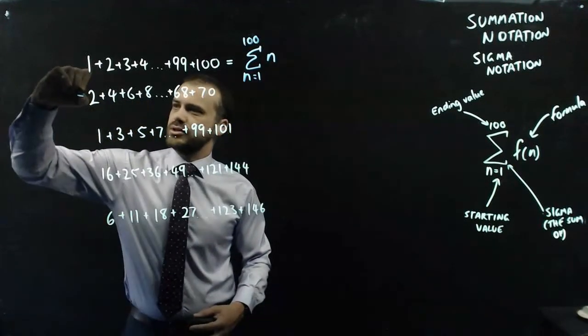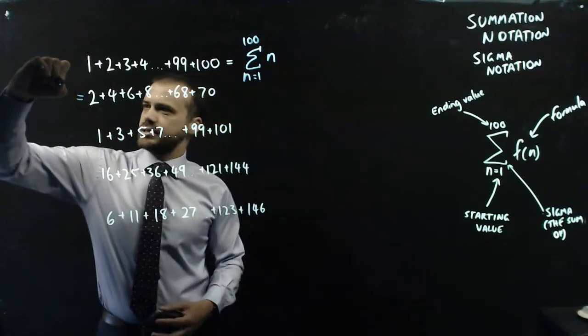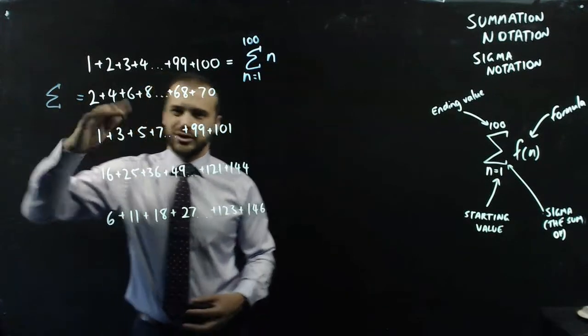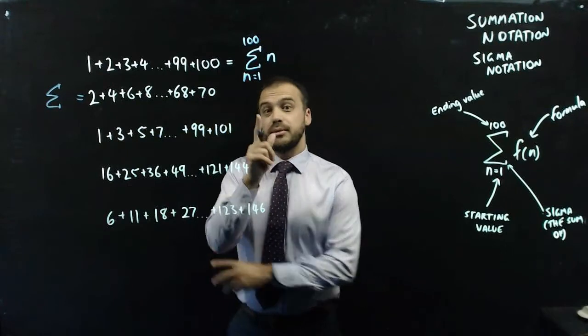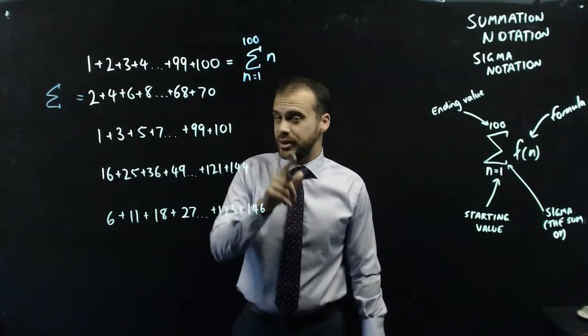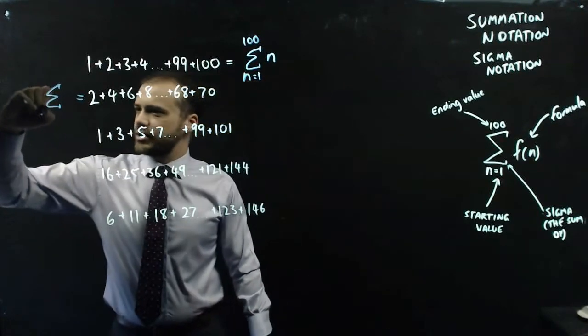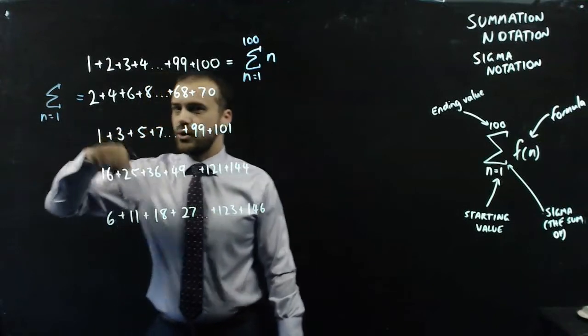I'll just put this over here this time. We're going to need our sigma sign again, because we're doing a sum. We're going to do that every time. Now, our starting value. You might be thinking my starting value is going to be 2. It's not. My starting value here is going to be 1, and you'll see why in a second.